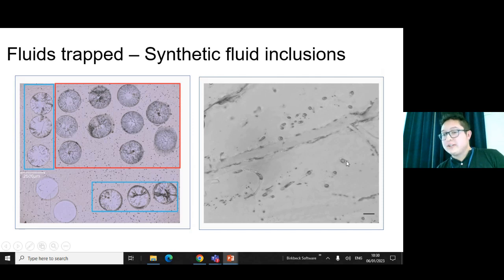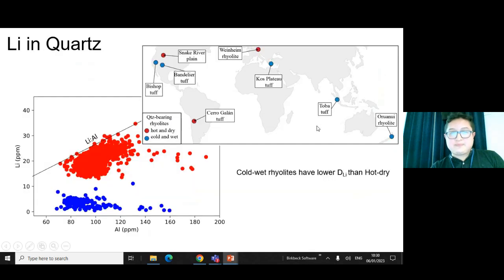When we start to talk about distribution of lithium in quartz, we need to know where lithium sits. A lot of studies have shown that lithium works as a charge balance for aluminum defects in quartz. What we saw was when you divide the data set between what we call cold-wet rhyolites (usually related to subduction zones) and the hot-dry rhyolites (usually intraplate volcanism), you can see that lithium is higher in hot and dry systems compared to the cold and wet. Basically you're trying to charge balance more lithium and aluminum.